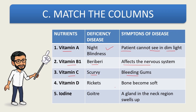Vitamin C causes scurvy, and the symptom is bleeding gums. Vitamin D deficiency causes rickets — bones become soft. Iodine deficiency causes goiter, where a gland in the neck region swells up. These are the deficiency diseases and symptoms for the match the columns section.